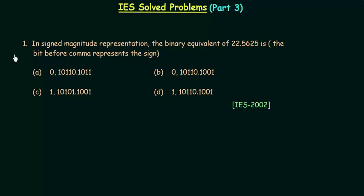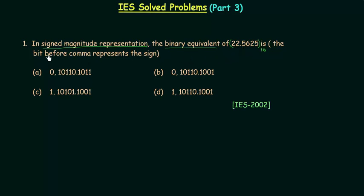Welcome to this part. In the first problem we have to find the signed magnitude representation for the binary equivalent of 22.5625. This is in decimal and the first thing we have to do is to find the binary equivalent of this decimal number, and then we will represent it using signed magnitude representation.